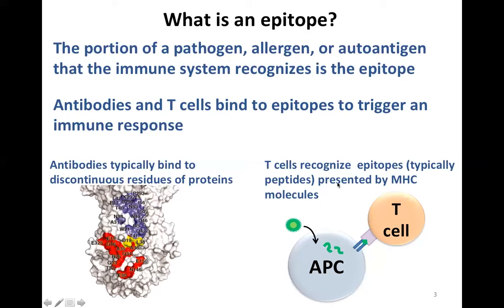T cells typically recognize peptides that are processed by antigen presenting cells. These cells process viral particles, pollen, bacteria — breaking them into little pieces that are presented on the cell surface. The T cell comes along with a T cell receptor that recognizes both the epitope and the MHC molecule presenting the peptide. Different groups of humans express different MHC molecules genetically, so the combination of which MHC a patient has and which epitope is being recognized by the T cell is really important.